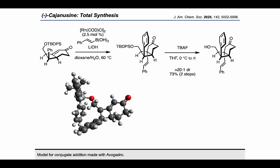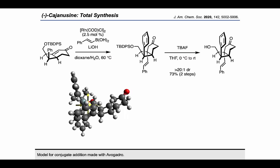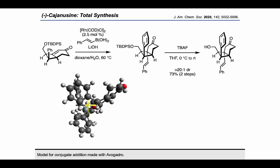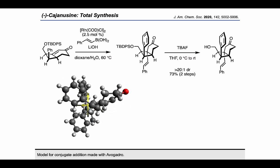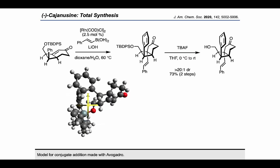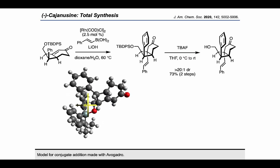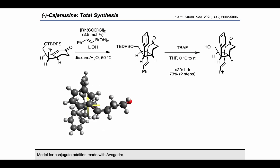In a 3D model, starting from the top view again, we can reorient to look at the bottom face of the cyclobutane ring and see that there's actually a reasonable amount of space for an incoming nucleophile to attack from, especially compared to the substrate in the first-generation synthesis.